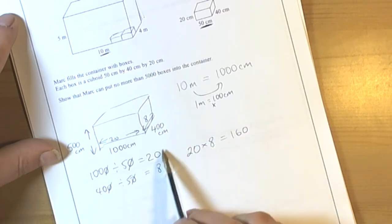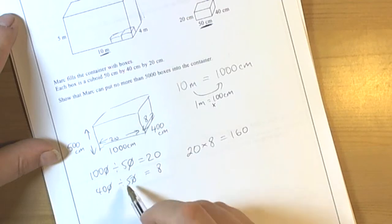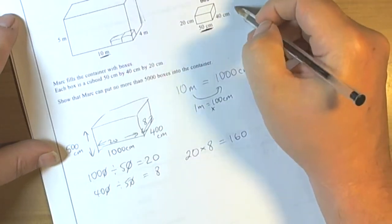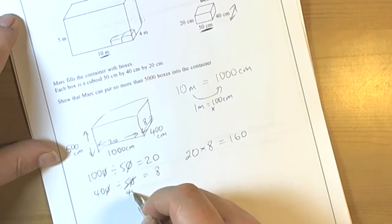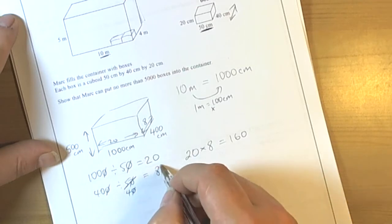We check this through and realize we made a mistake because the width of the box was actually forty not fifty. So we change that to forty. Forty divided by four is actually ten.